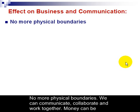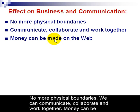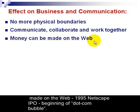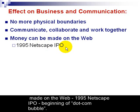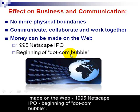The web had quite an effect on business and communication. There were no more physical boundaries — geographical location didn't matter anymore. Now we can communicate, collaborate, and work together no matter where we live. Money can be made on the web, not only with the buying and selling of products, but the fact that in 1995 the Netscape Corporation rolled out its first stock offering to the public. It not only began this dot-com bubble, but signified that money can be made on the web.